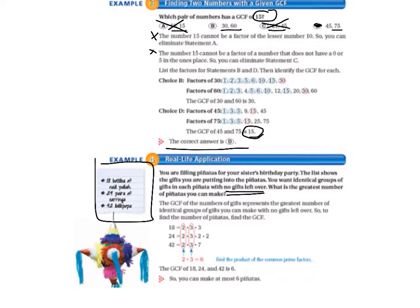So, the numbers that we're working with are 18, 24, and 42. They're right down here, and they're also on the list. The greatest common factor of the numbers of gifts represents the greatest number of identical groups of gifts you can make with no gifts left over. So to find the number of piñatas, find the greatest common factor.